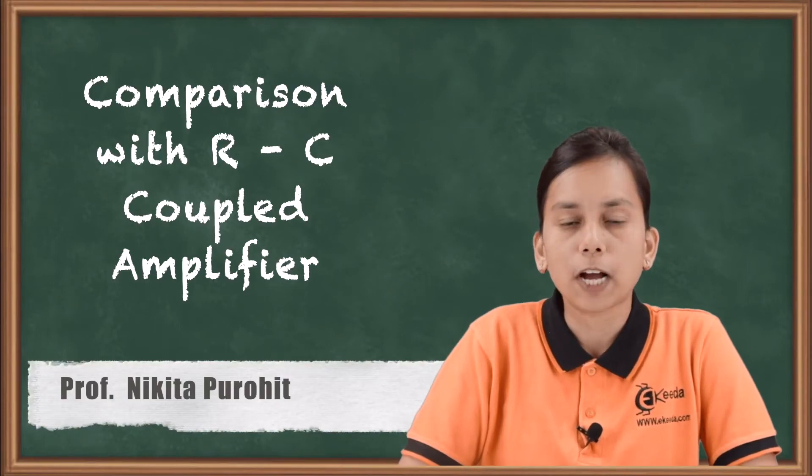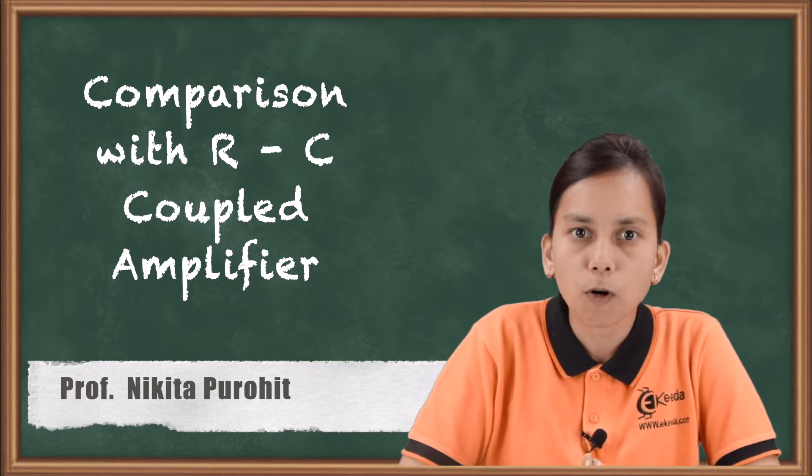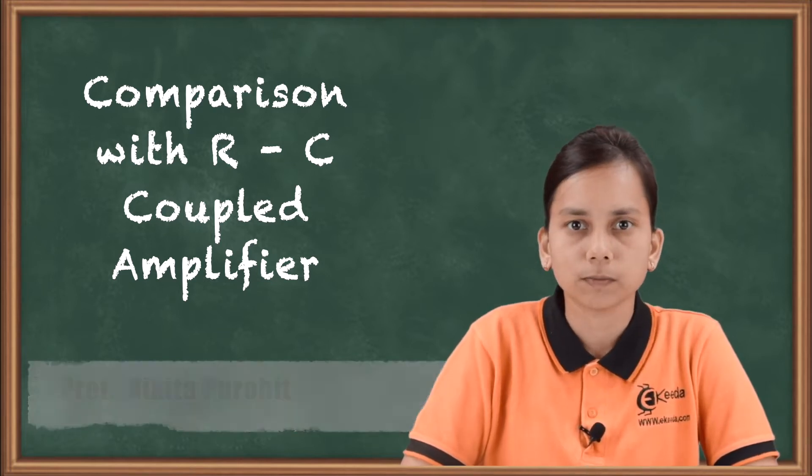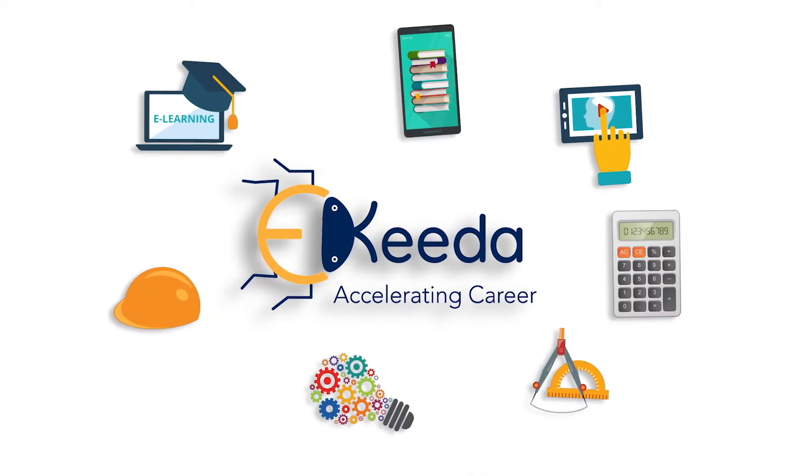Hello friends. In this video we are going to compare some of the operations and advantages of op-amp with RC coupled amplifier. In our previous video we discussed the introduction to operational amplifier. Now we are going to compare some of the operations of operational amplifier with RC coupled amplifier. As the name suggests, RC coupled amplifier consists of a resistor and capacitor such that it can amplify the signal.